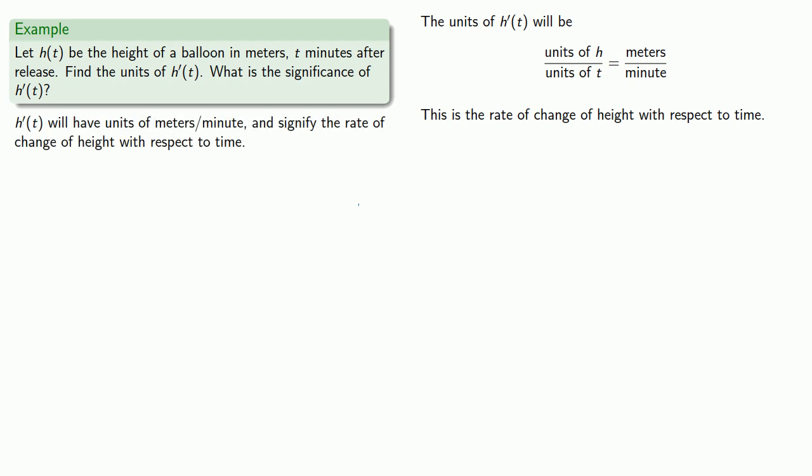Now that's a literal interpretation of the units of h prime of t and the significance of h prime of t. And if the universe were a kind and gentle place, the literal interpretation would always be sufficient. Unfortunately, the universe is not so kind and not so gentle. And one of the important things is that we often have to impose an additional interpretation on our results before we can get them to make sense to somebody who isn't a mathematician.